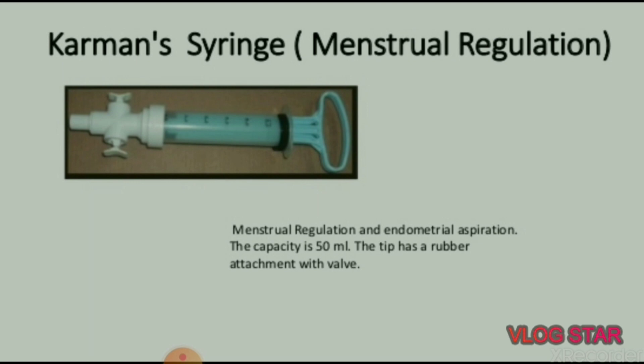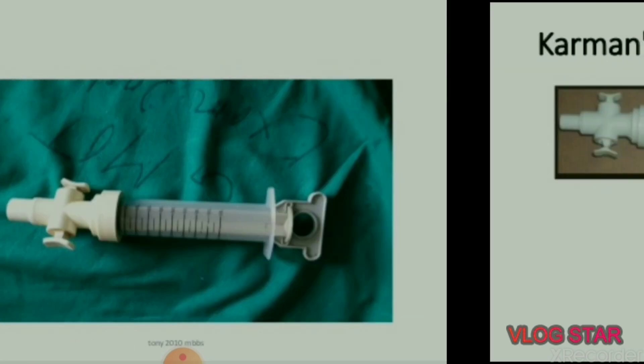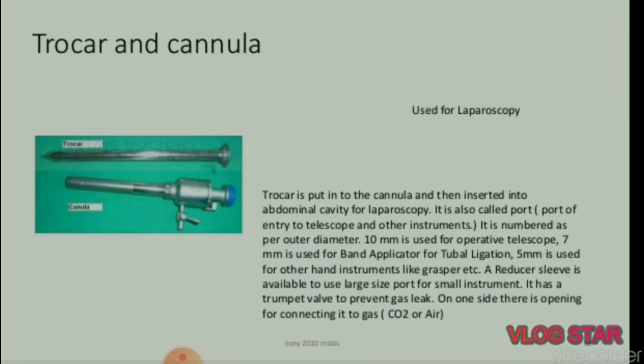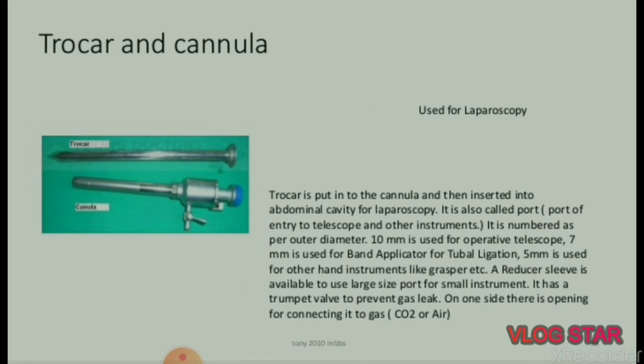Next is Karman syringe, used for menstrual regulation and endometrial aspiration. The capacity is 50 milliliters. The tip has a rubber attachment with a valve.